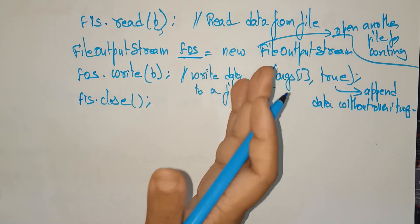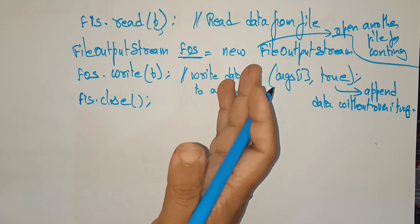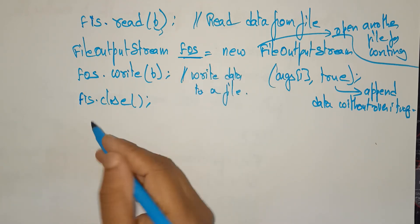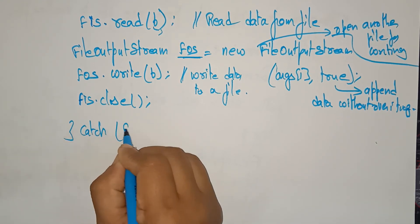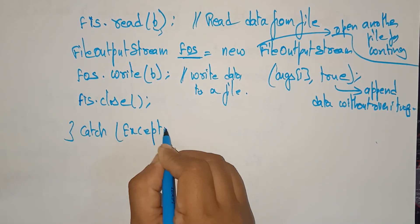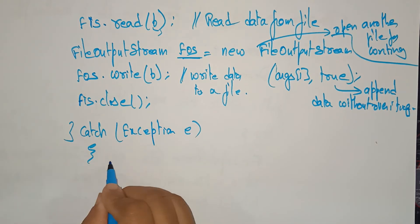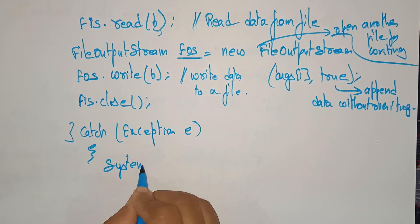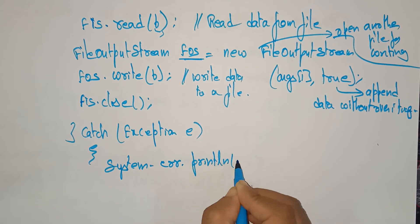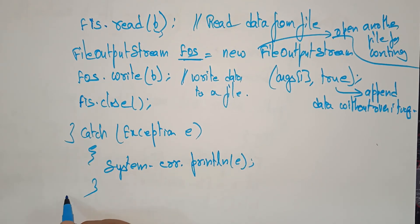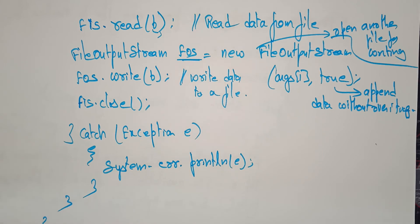If any exception occurs, it has to be caught. The catch block handles it: catch(Exception e) { System.err.println(e); } — so if any exception is occurred, this block executes.